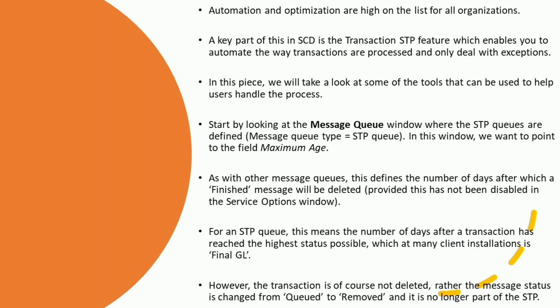Automation and optimization are high on the list for all organizations. A key part of this in SimCorp Dimension is the transaction STP feature, which enables you to automate the way transactions are processed and only deal with exceptions. In this piece, we will take a look at some of the tools that can be used to help users handle the process.